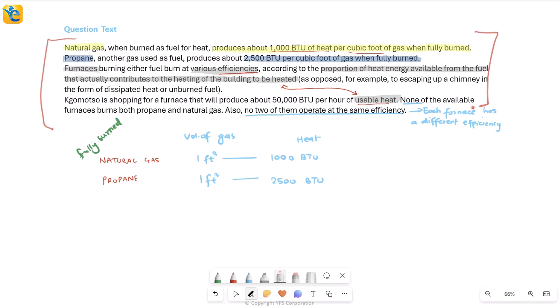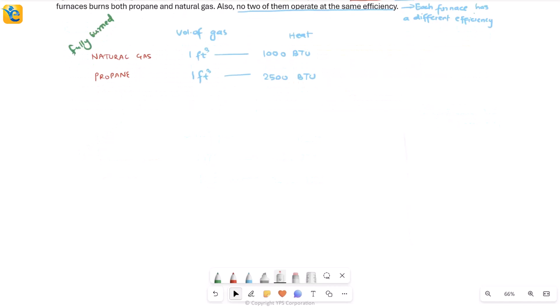So quite a lot has happened here. In this question stem, I found out things about two gases, what furnaces do, how they have efficiencies, which is about how much usable heat they generate, how every two furnaces will have a different efficiency and how no furnace can burn both of these fuels. It'll be either natural gas or propane. Now till here, I haven't found anything specific about what the efficiencies are. It's just that I know these are different efficiencies. And I have this goal that Komotso has. So without getting too deep into trying to create combinations, we will have to go further and really look at the question, then we'll come back and process as required.